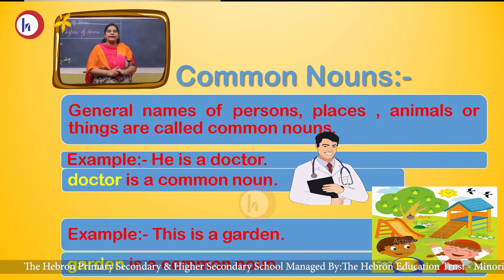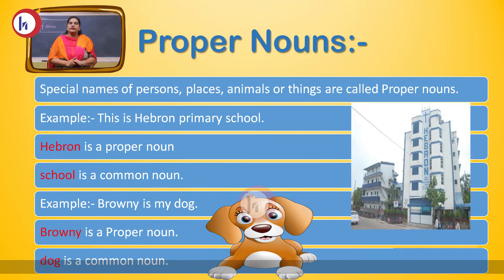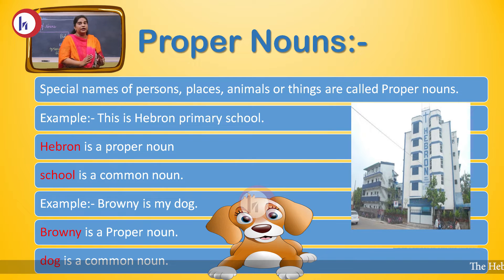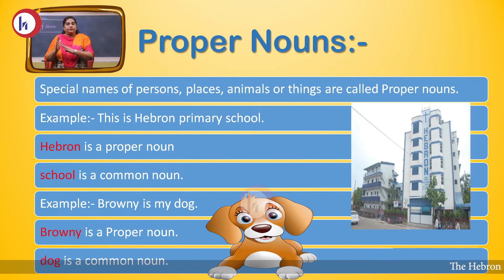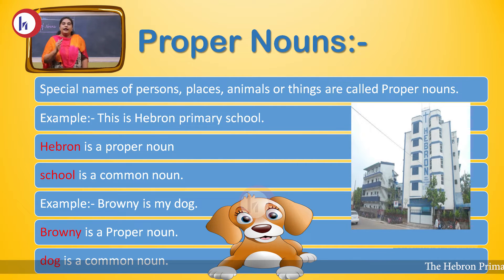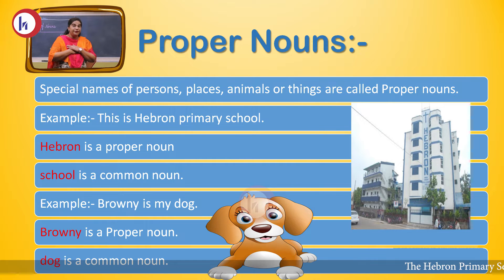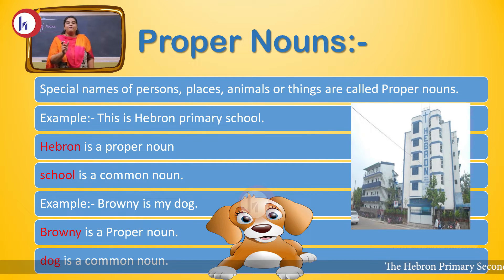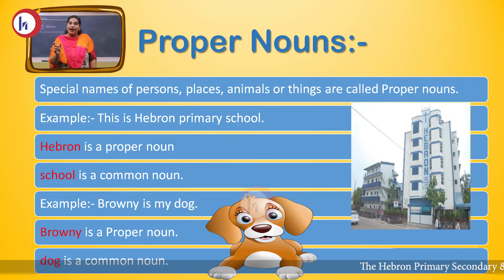Now let's look at the second type of noun, that is proper noun. Proper noun means a very special, particular name of a person, place, or thing. Let's take some examples. My name is Mrs. Roma Christian. I am a teacher. In this sentence, 'Roma' is a proper noun. 'Teacher' is a common noun.